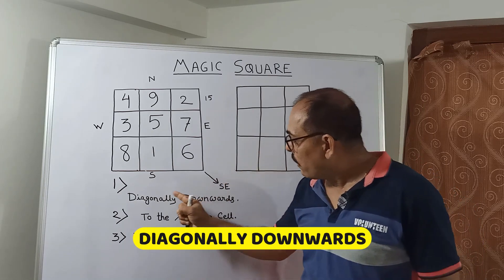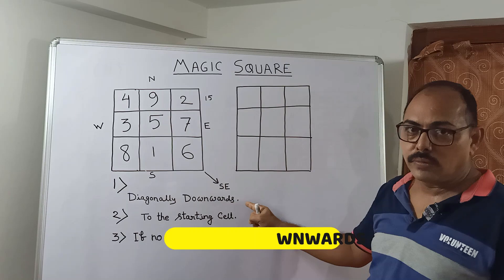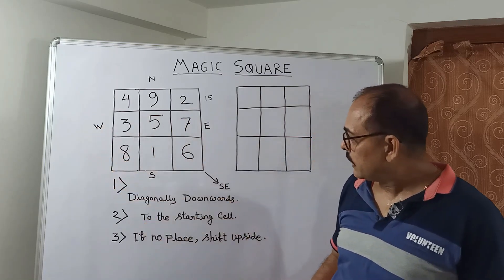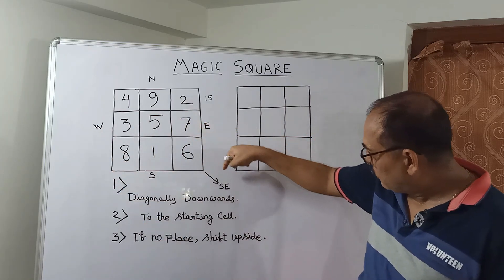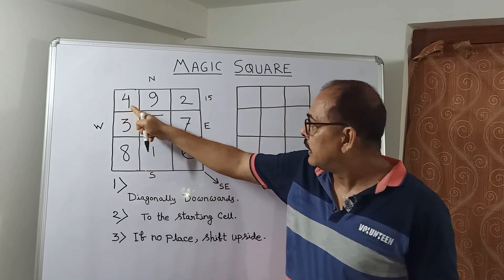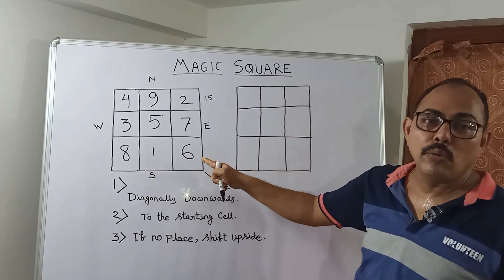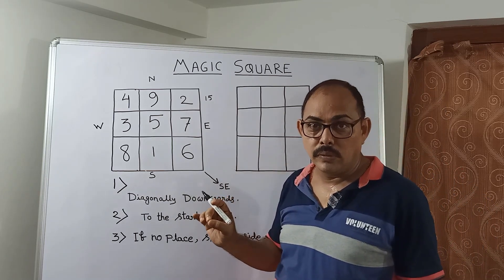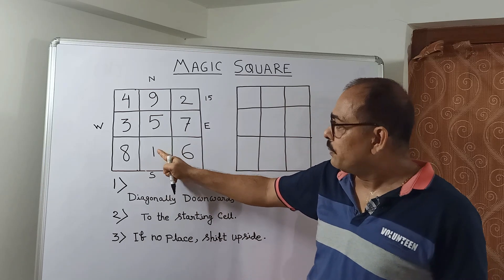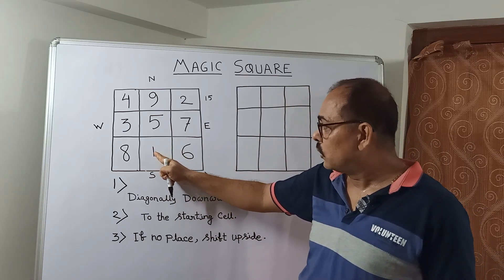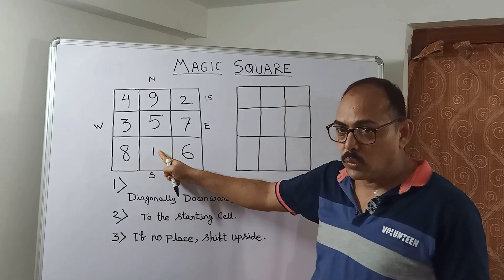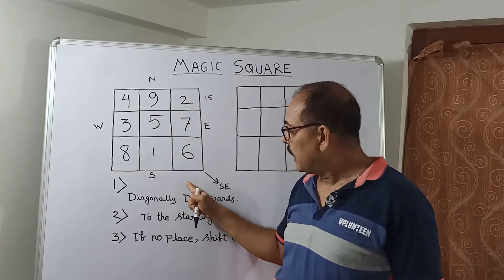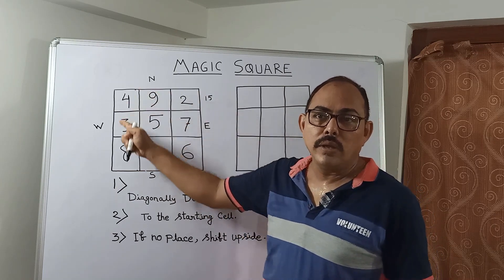The first rule — and it is a fixed rule — you have to allot all the numbers diagonally downwards. If you think of this as a map with north, south, east, and west, then south east is the direction. For example, 4, then 5, then 6 — this is the way we allot all the numbers diagonally downwards. We start from here with 1, and according to the first rule, the next number 2 should go diagonally downwards.